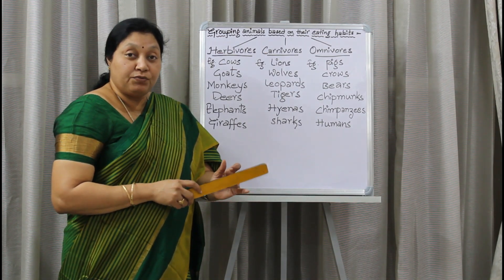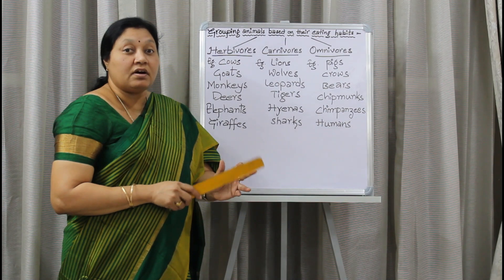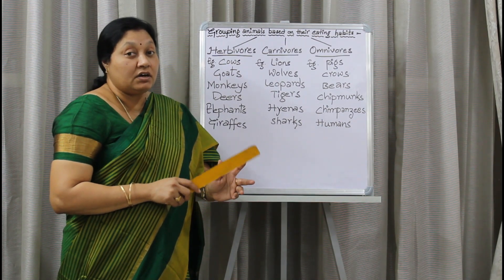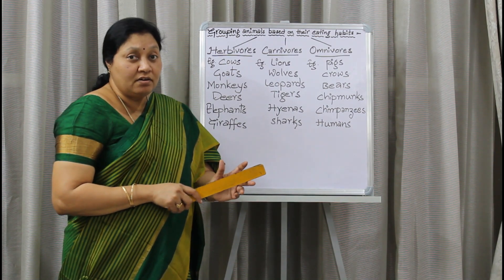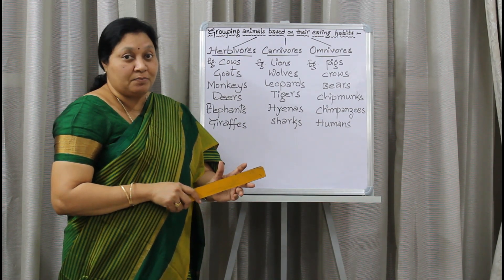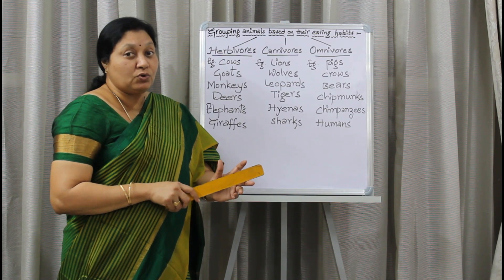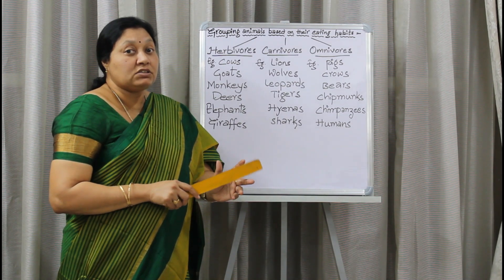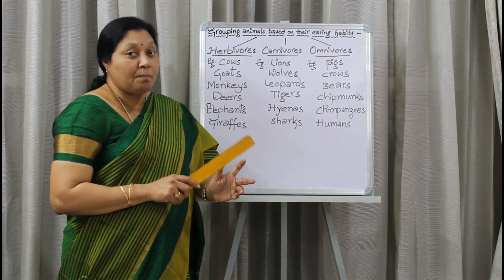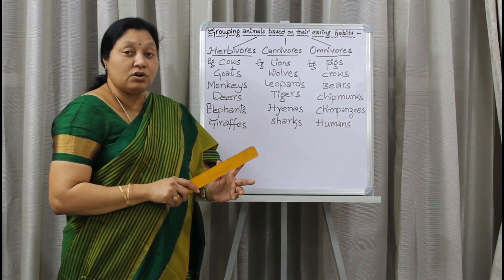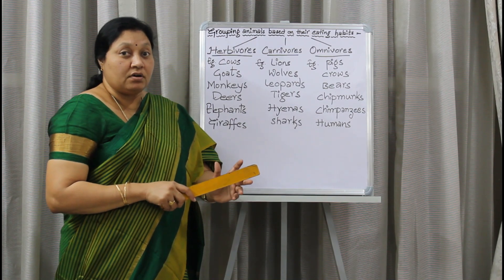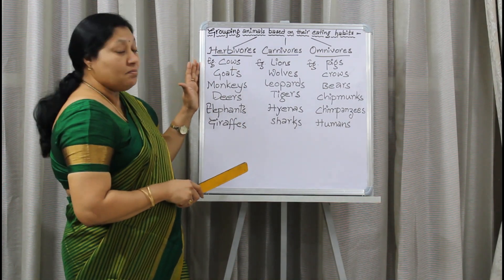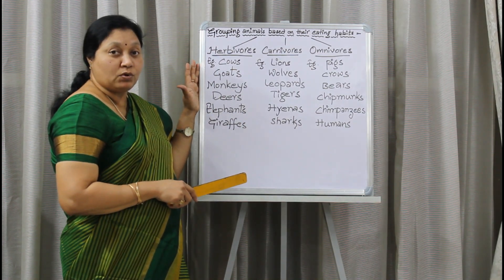Herbivores eat fruits, grass, and the leaves of plants in order to get their energy. This is the first group of animals, which depend on plants in order to get their food. We call them herbivores.